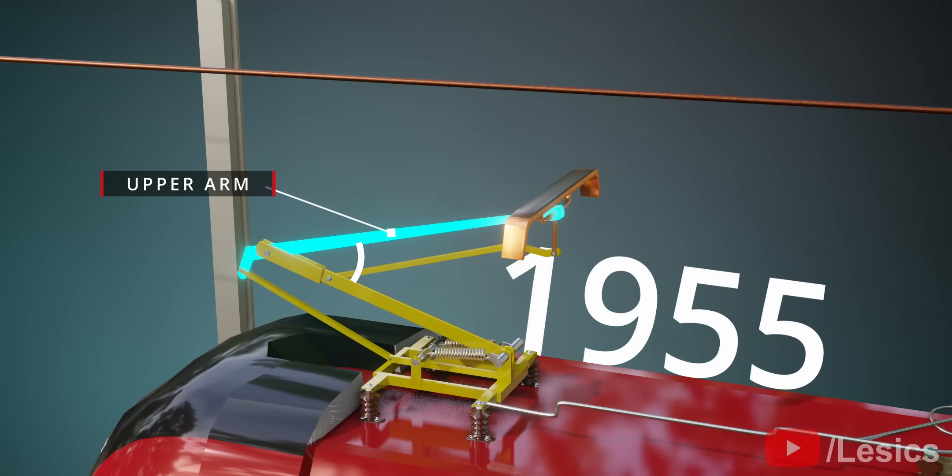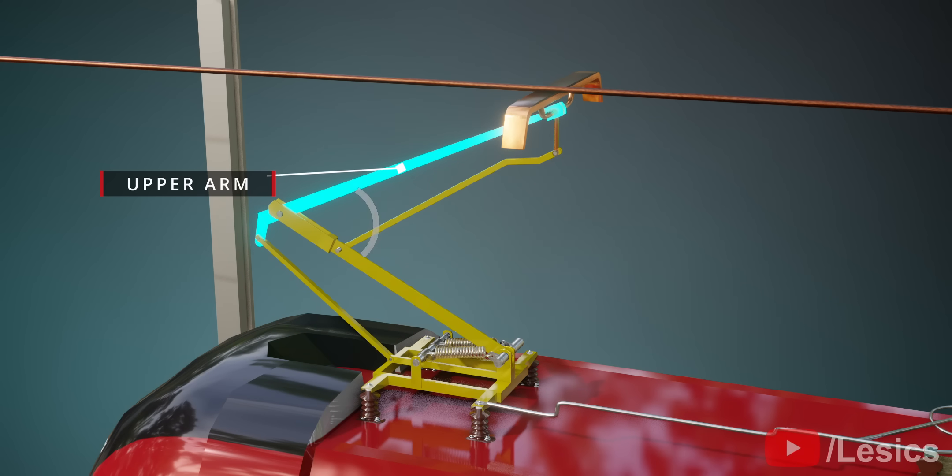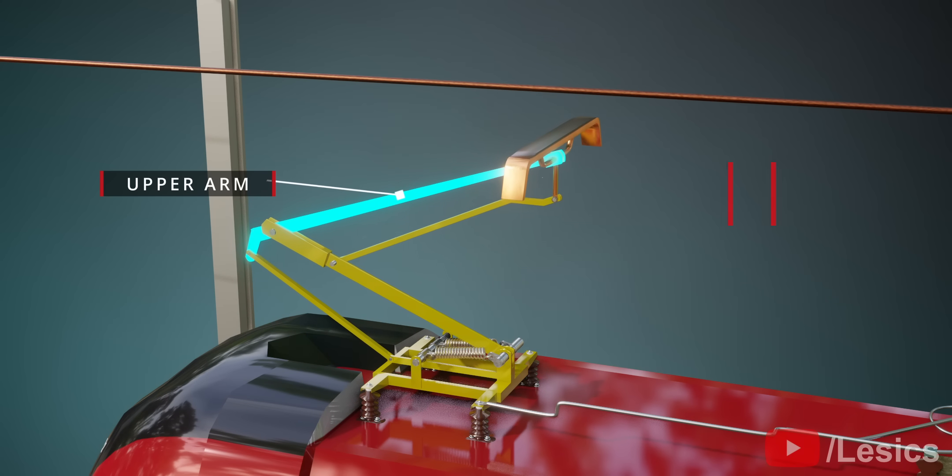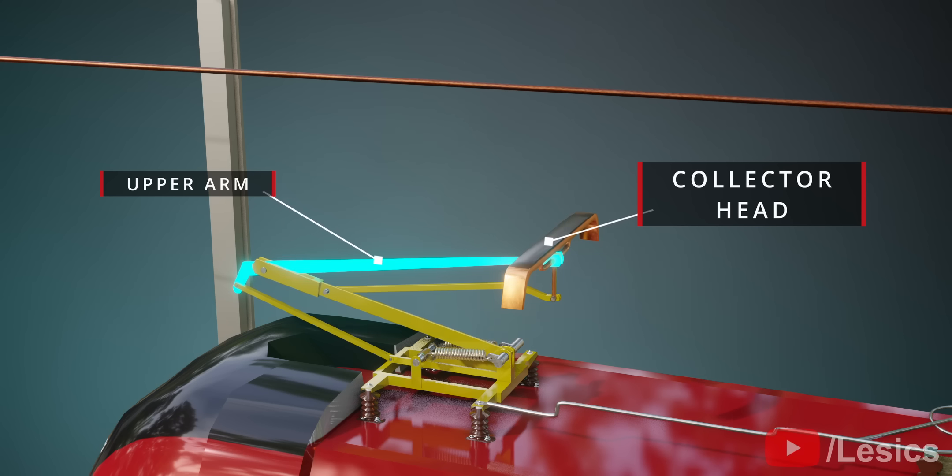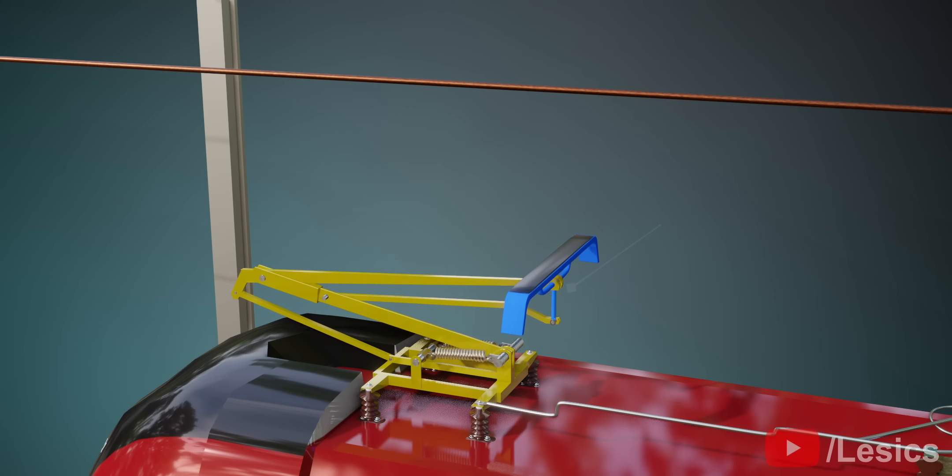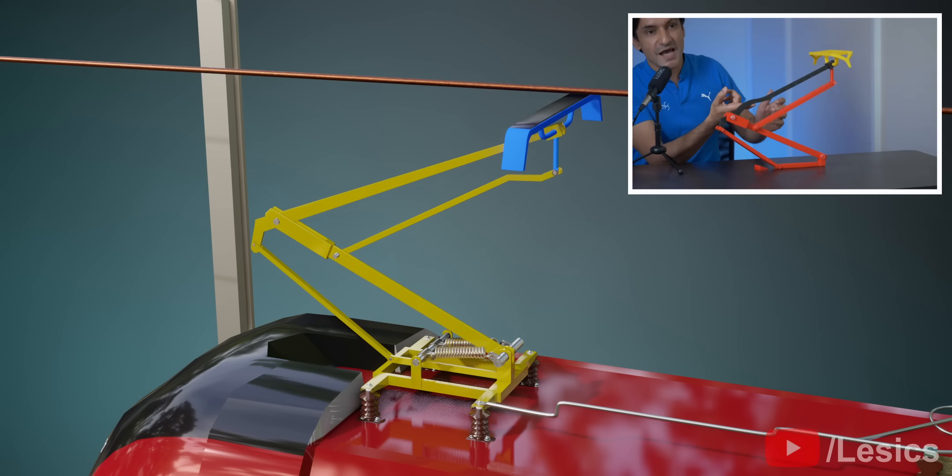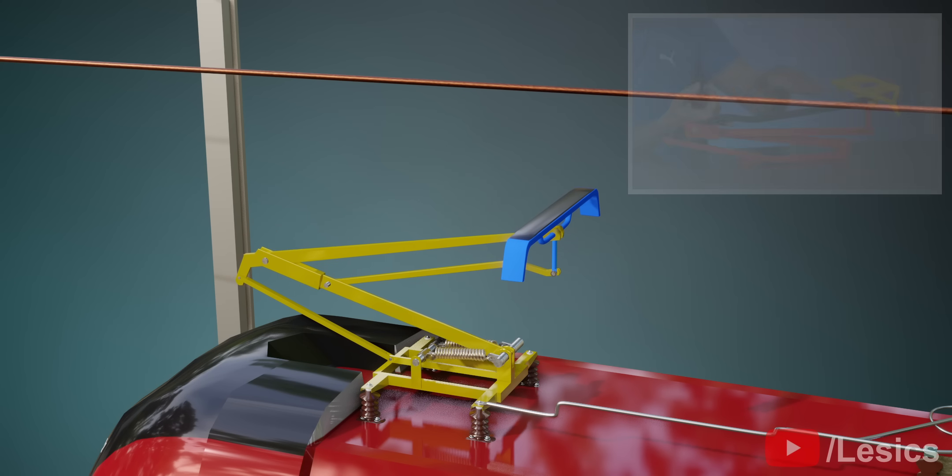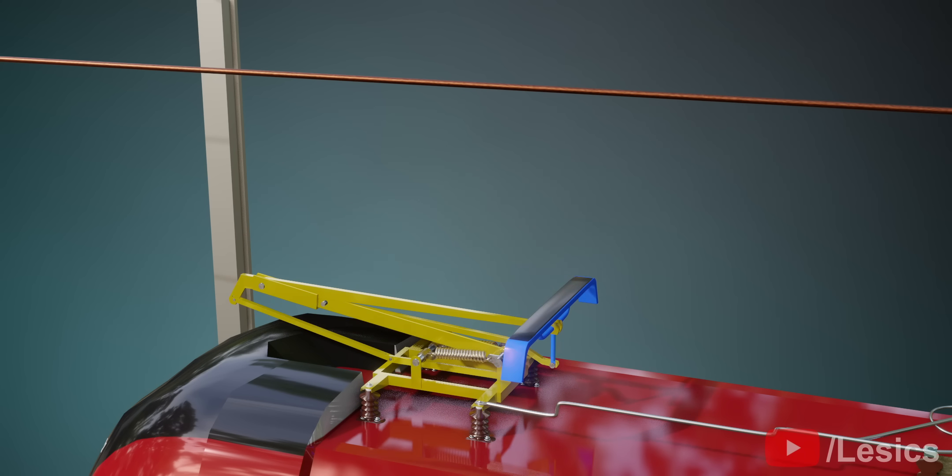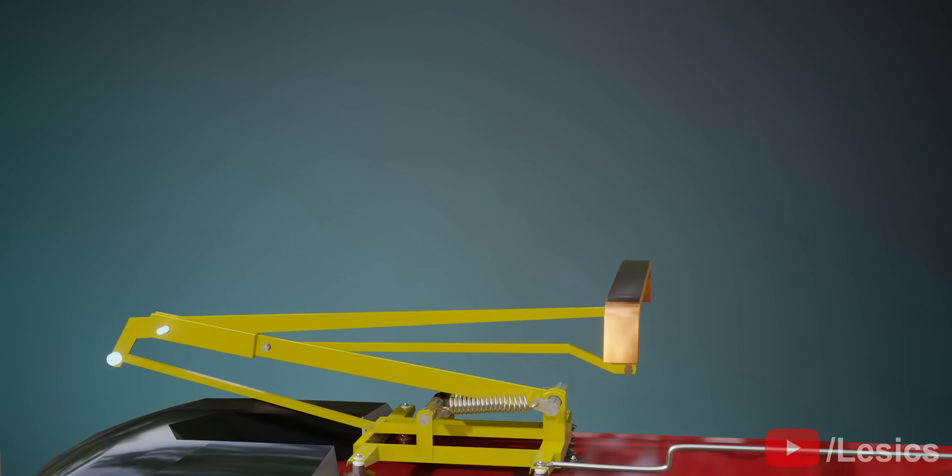You can see the upper arm changes its angle during the operation. And the most important part of this device, the collector head, is connected to this upper arm. As we saw in the demonstration, the collector head remains perfectly horizontal, even though it's connected to the upper arm. Let's now explore the secrets of this amazing invention.